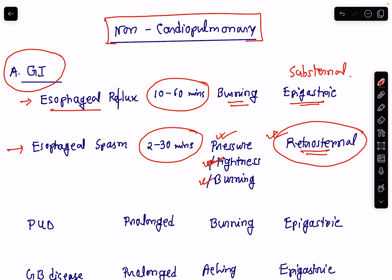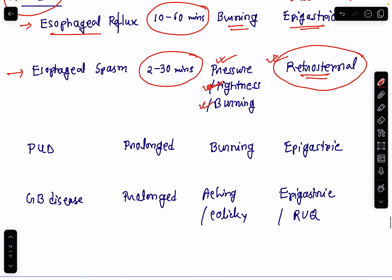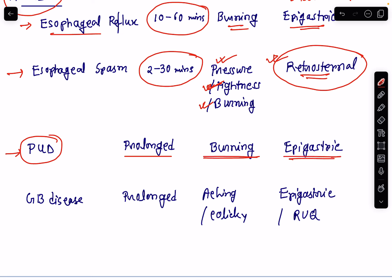We really need to differentiate esophageal spasm from myocardial infarction. Next is peptic ulcer disease. The duration is varied — usually prolonged — and the pain is burning type, felt in the epigastric region. It is usually related to meals and most of the time the pain lasts for 60 to 90 minutes.